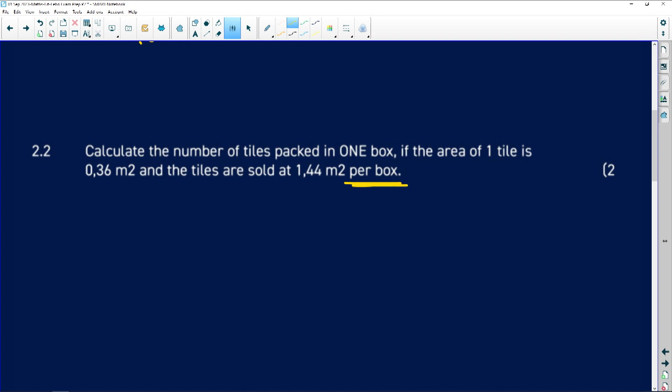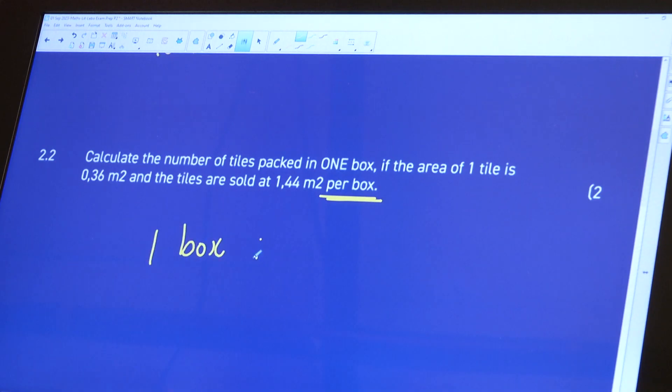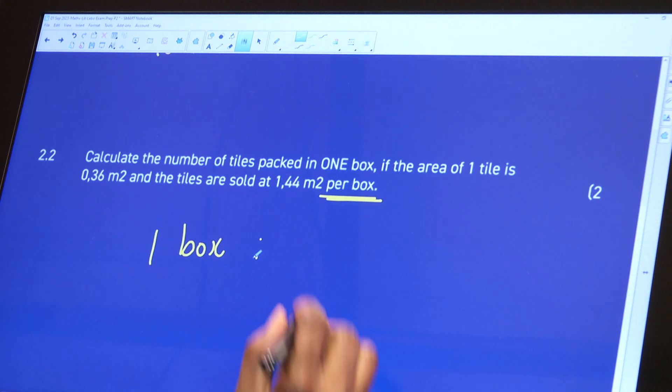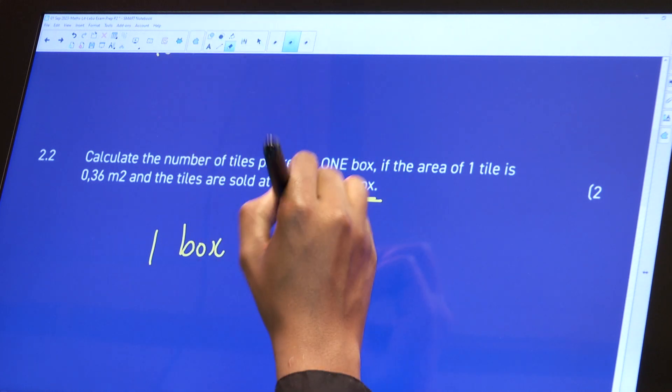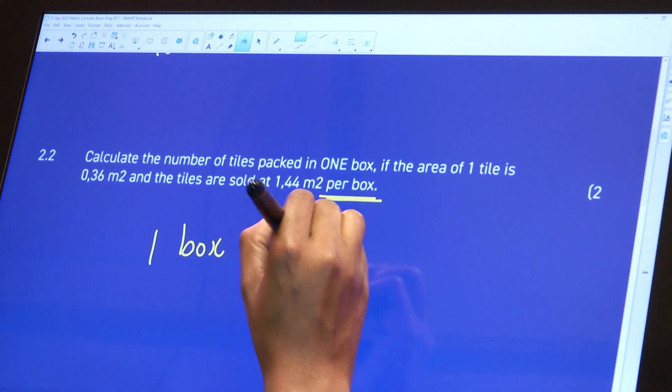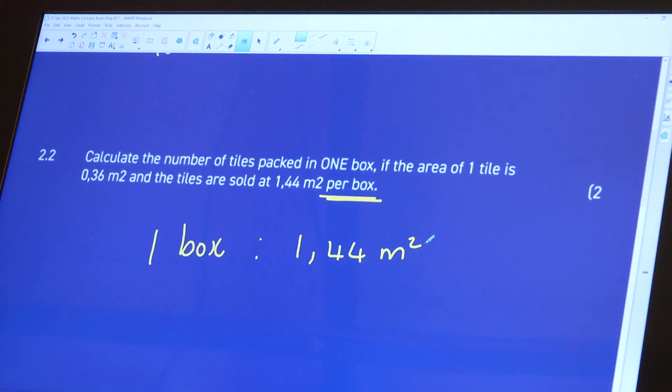So I know that one box is going to cover 1.44 meter square. That's what I know. But I then want to know how many tiles are going to be in this box. So let's see. It says the number of tiles packed in one box. If that is the situation. So let's just see something. 0.36 meters square. So that's going to tell us, so I'm going to cross multiply. I'm going to, okay, no, this one, this one is not going to work with this particular method.